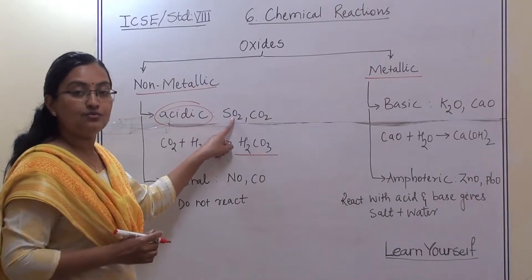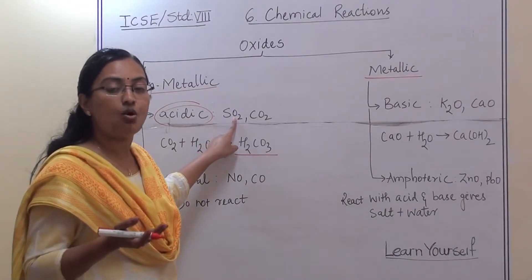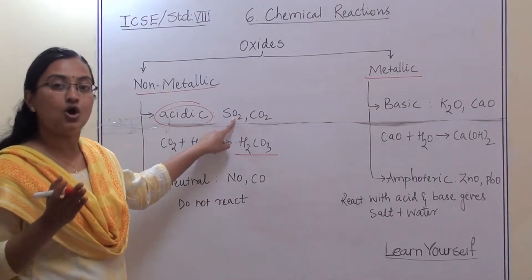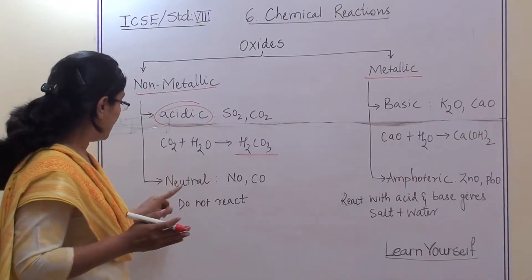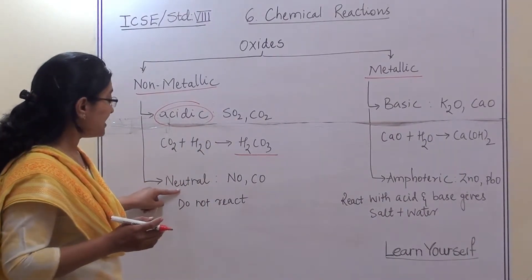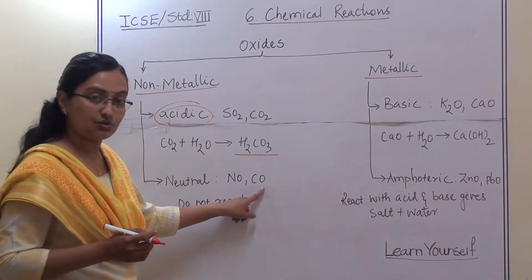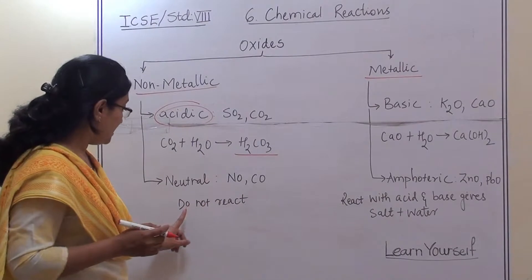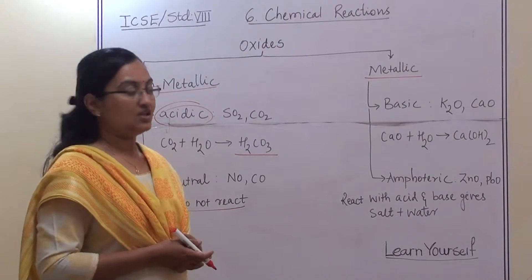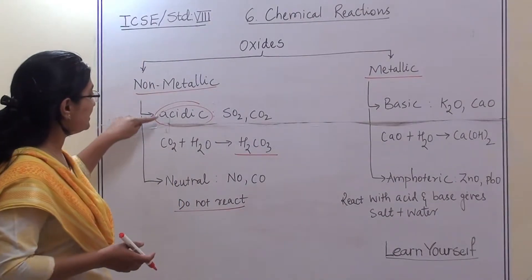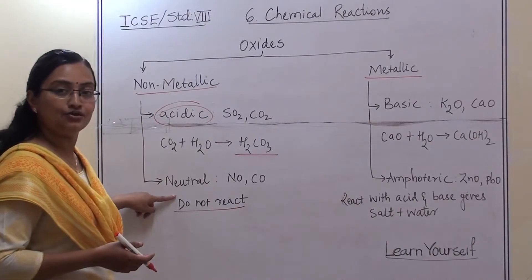Sulfur dioxide when it reacts with H2O will give us sulfurous acid or sulfuric acid. So non-metallic oxides always give us an acid. However, some oxides are also neutral — for example, NO and CO. Carbon monoxide does not react with water because it is neutral. So in non-metallic oxides there are two types: acidic oxide and neutral oxide.